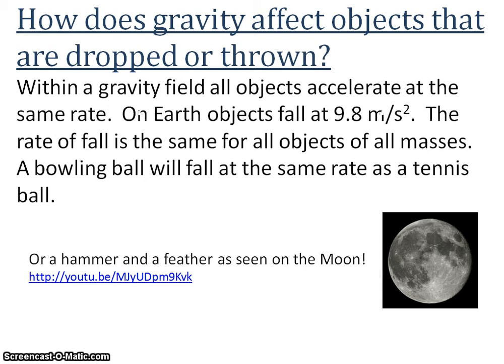Now, we know that gravity is that force that makes things fall down. But how does gravity really affect those objects that are dropped, or if we decide to throw it? There has to be some consistent way. We know that within a gravity field, all objects accelerate at the same rate. On Earth, every object will fall at 9.8 meters per second squared. That's the acceleration. If I drop something, it's going to fall at. And that rate of fall is the same for all objects of all masses.